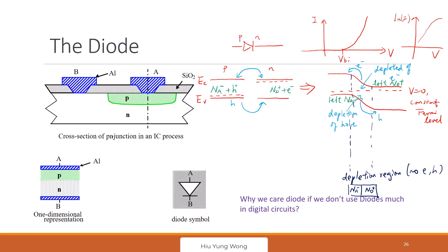You might ask: why study the diode if we're talking about digital circuits and don't use diodes much? You're right, but we need this PN junction — in MOSFETs, all MOSFETs have PN junctions. For planar devices we still have PN junctions, so that's why we need to study this.